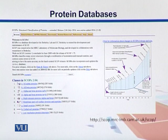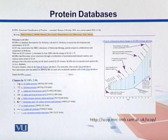SCOP is a similar effort that utilizes different structural elements of proteins to classify them. Proteins are classified based on structural elements such as family, fold, superfamily, domains, and classes. Class is the broadest level in the SCOP hierarchy.